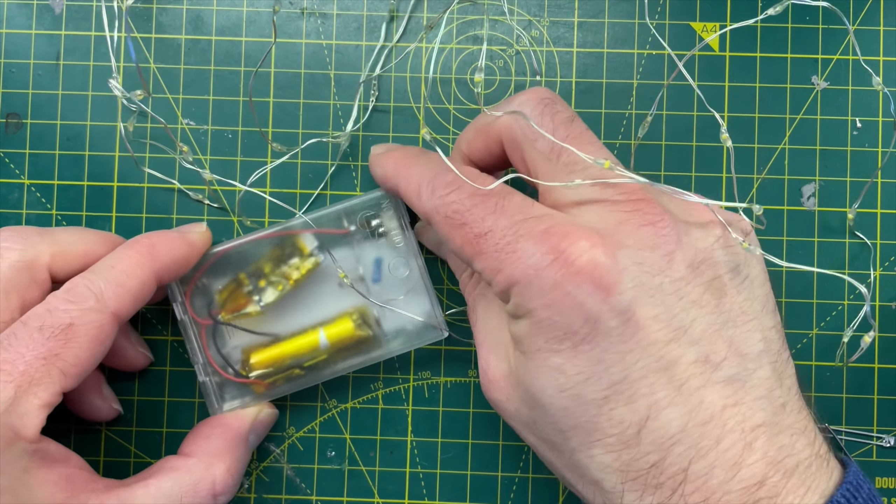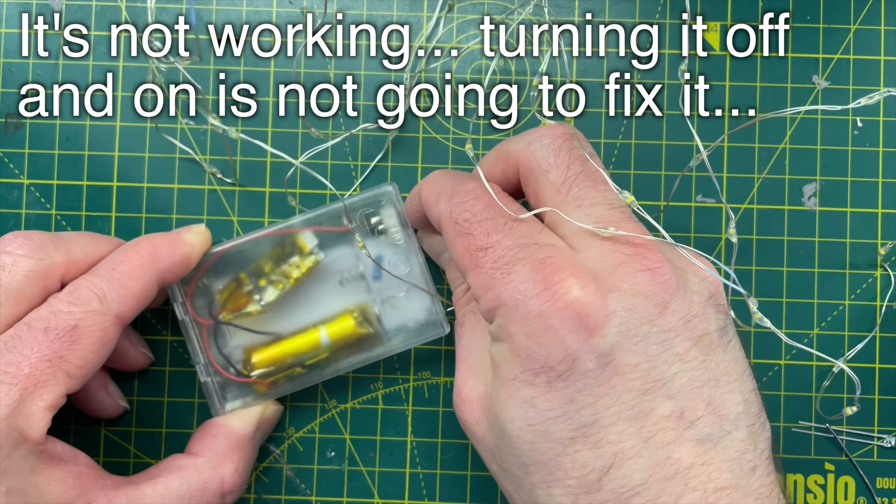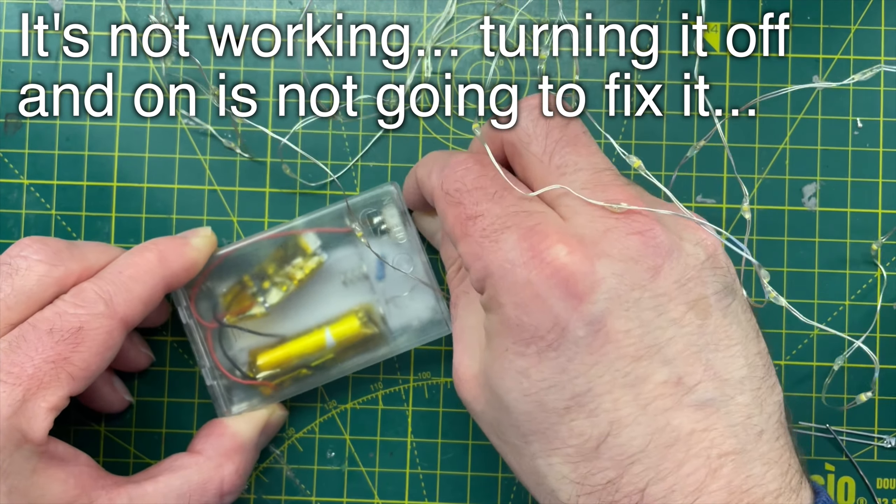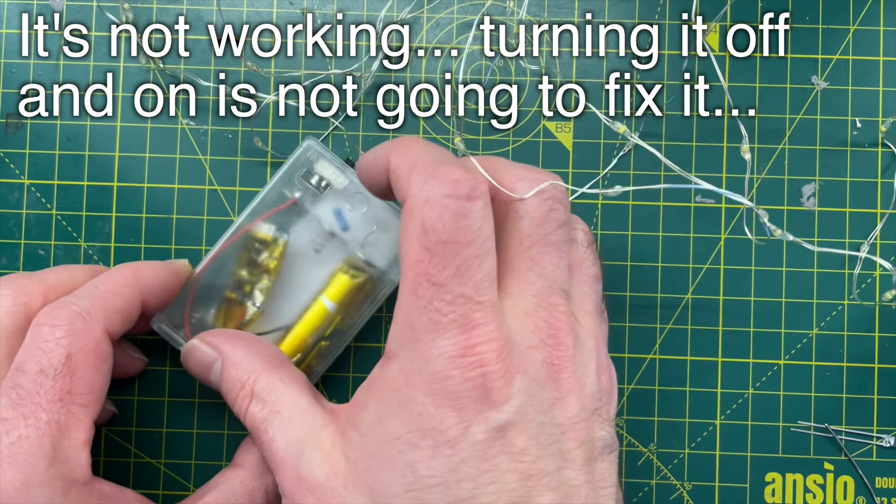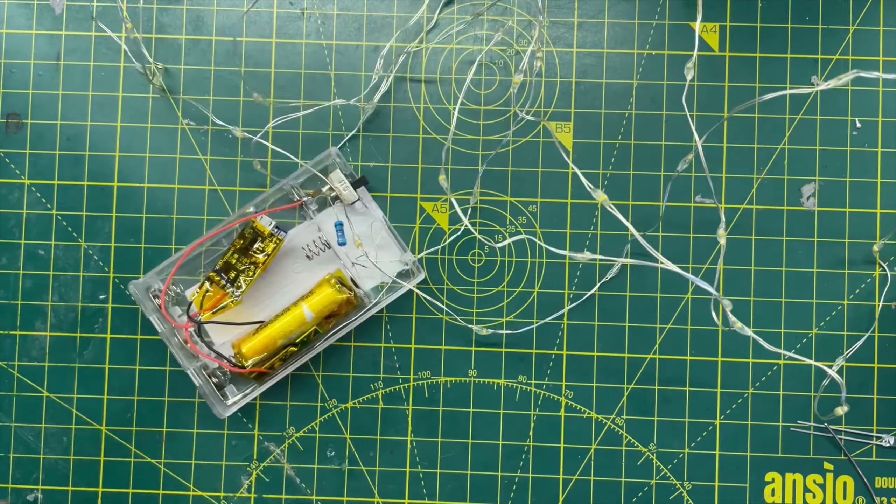I've encountered an interesting problem with my string of LED lights. I've converted them to run on a rechargeable lithium battery in a previous video and it looked like everything was working fine.